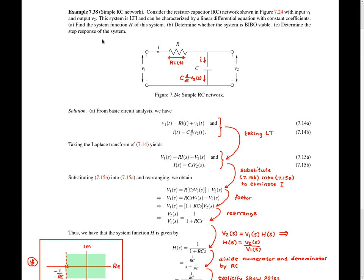As the first step in the solution process, we're going to write some equations that characterize the behavior of the system in the time domain. To make this easier, we're going to first label the circuit diagram with the voltage drop across the resistor and the current passing through the capacitor. The voltage drop across the resistor is equal to the resistance R times the current little i passing through the resistor, so the voltage drop is simply R times little i, as given in this annotation here.